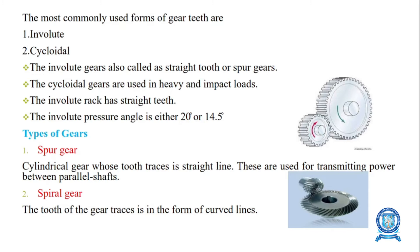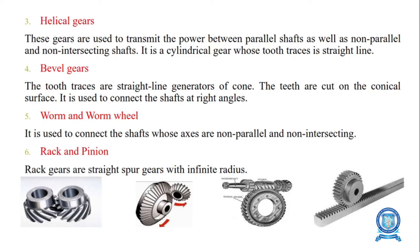Spiral gear: the tooth traces are in the form of curved lines. Helical gears are used to transmit power between parallel shafts as well as non-parallel and non-intersecting shafts. Helical gears are a simple modification of the spur gear; the angled teeth engage more gradually than spur gear teeth.